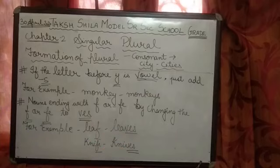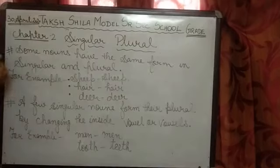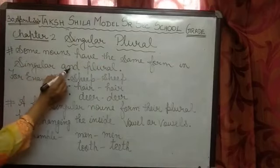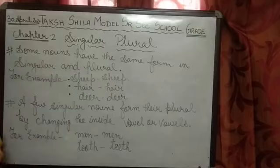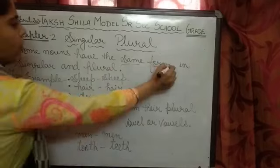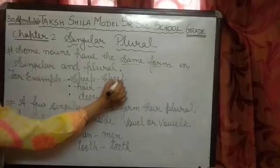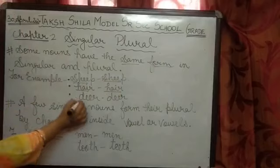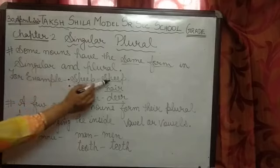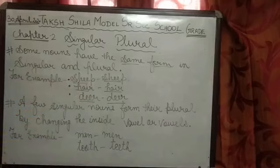Now we will go to another rule. Some nouns have the same form in singular and plural. So children, some nouns are there in which there is no need to change singular into plural — they are as they are; they have the same form. For example, sheep stays sheep, hair stays hair, deer stays deer. In these examples, you can see that singular and plural both have the same form.